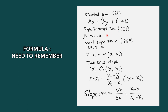Look at the question first to see what form it's asking for. When it says point-slope form, you're given a point and the slope, and you find the equation of the line using that formula. And for two-point slope, this is how you find the slope — the change of y over change of x — that is y sub 2 minus y sub 1 divided by x sub 2 minus x sub 1.